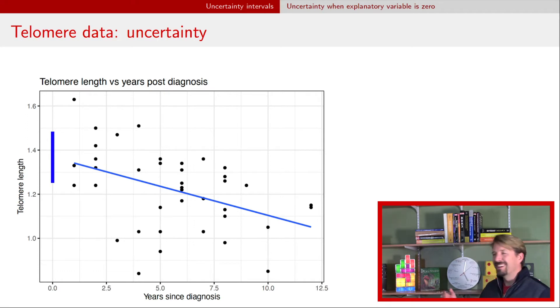But now, x is zero, years since diagnosis is zero, and there's actually no observations there. So for one thing, we might not be that interested in it. Number two, there's no real information there. We have data that's pretty close, but not exactly there. So the next step might be to say, what if we want to make a statement about some other value on the x-axis, some other explanatory variable value, some other years since diagnosis?